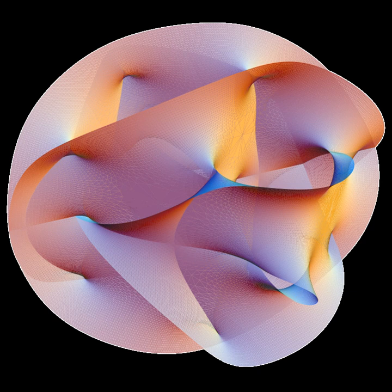Additionally, it can be shown that any massless spin-2 field would give rise to a force indistinguishable from gravitation, because a massless spin-2 field would couple to the stress-energy tensor in the same way that gravitational interactions do. This result suggests that if a massless spin-2 particle is discovered, it must be the graviton.